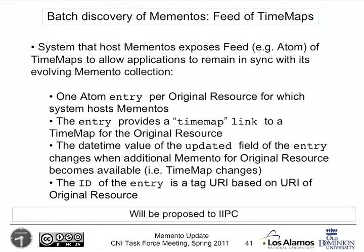That means we can find the mementos themselves, the archived copies, but how do we find the time maps that describe them? One way we've been thinking about is to use an Atom feed that, instead of saying here are all of the mementos, says here are the time maps for each of the mementos. This would allow applications to remain in sync with archives such as the aggregator which would redirect clients to the right place. We'd have one Atom entry for each original resource for each system that hosts mementos, with a time map link describing whereabouts each archive copy is and the time at which it was present.